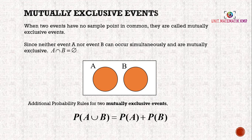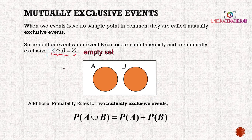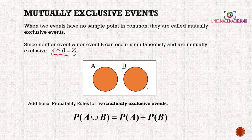Mutually exclusive events: when two events have no sample points in common, they are called mutually exclusive events. Since neither event A nor event B can occur simultaneously, we say that A intersect B equals zero. The additional probability rule for two mutually exclusive events is P(A union B) = P(A) + P(B).